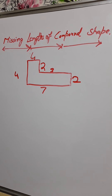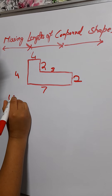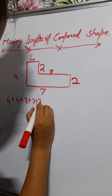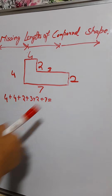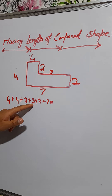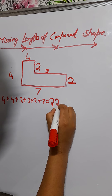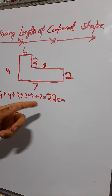Now let's find the perimeter. We have to add all of the sides together: four plus four plus two plus three plus two plus seven. Four plus four gives us eight; eight plus two is ten; ten plus three is thirteen; thirteen plus two is fifteen; fifteen plus seven gives us twenty-two.